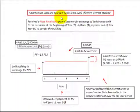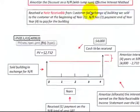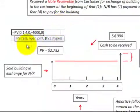What I'm going to demonstrate is how to amortize the discount on a note receivable with a lump sum payment — that's a payment at the end of the period when the note is due. We'll use the effective interest method. So what is that note receivable here?